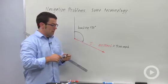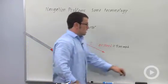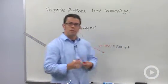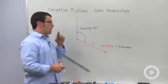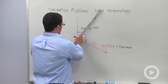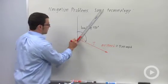Now the other variable in these navigation problems is wind. Wind has speed and direction. Let's say the wind's blowing in this direction.